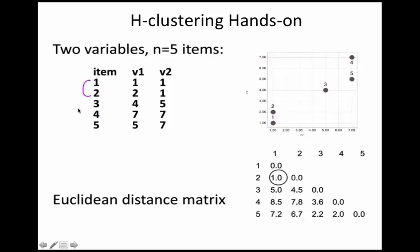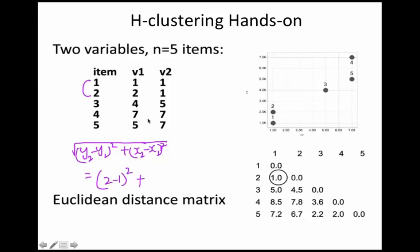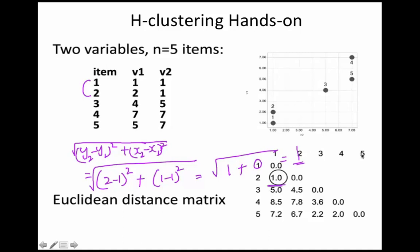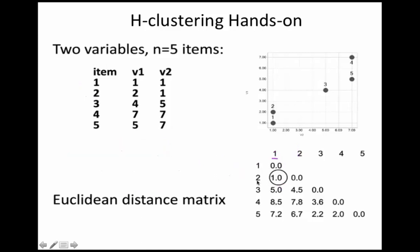We use Euclidean distance to calculate the distance between items 1 and 2, 1 and 3, 1 and 4, 1 and 5. The formula is: square root of (y2 − y1)² + (x2 − x1)². For items 1 and 2: square root of (2 − 1)² + (1 − 1)² = square root of 1 + 0 = square root of 1 = 1. So the distance between items 1 and 2 is 1.